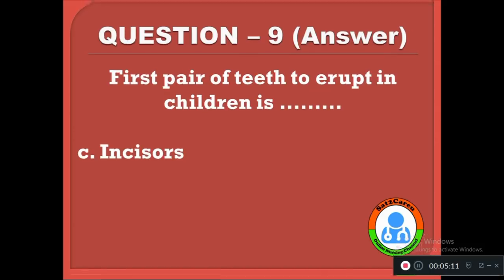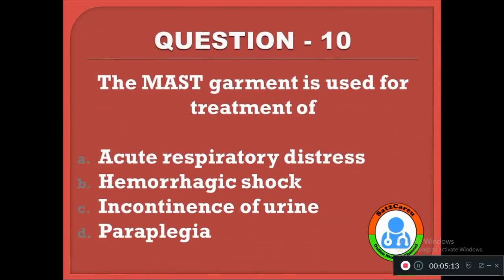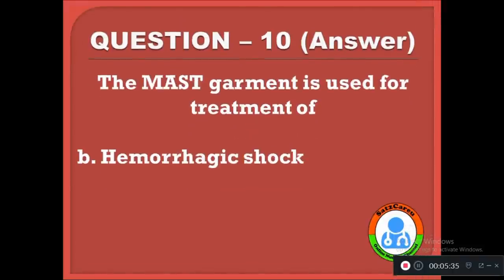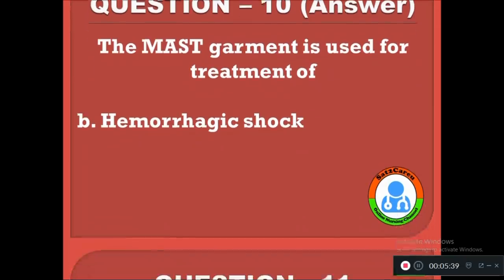Question 10: The MAST garment is used for treatment of — option A: acute respiratory distress, B: hemorrhagic shock, C: incontinence of urine, D: paraplegia. The correct answer is B, the MAST garment is used for treatment of hemorrhagic shock.